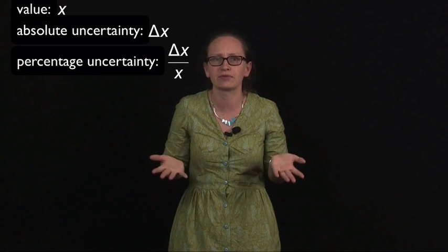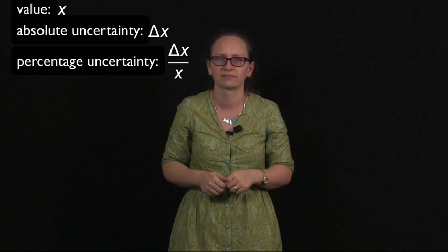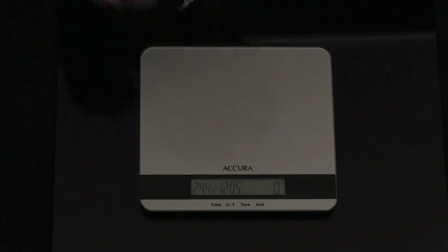Let's have a look at an example now. Here I have a set of 1 kilogram masses from our laboratory. What we're going to do is work out the actual mass of these 1 kilogram masses. In order to do that, we're going to measure the mass of 5 of them using a set of scales. We're then going to calculate the average value, and then we'll calculate the uncertainty in this value as well, so that we know how close to 1 kilogram these masses are.